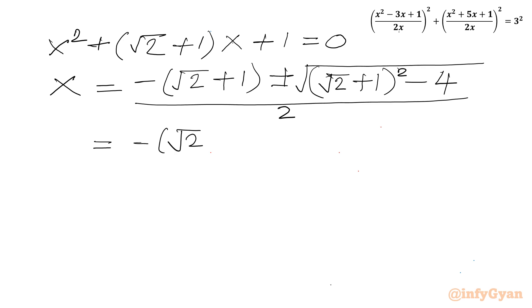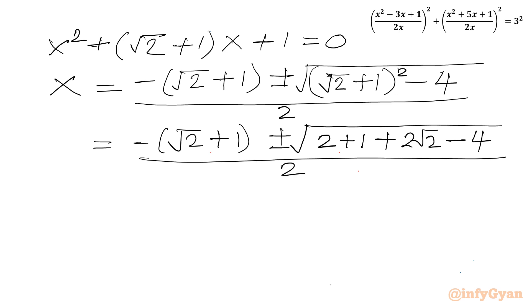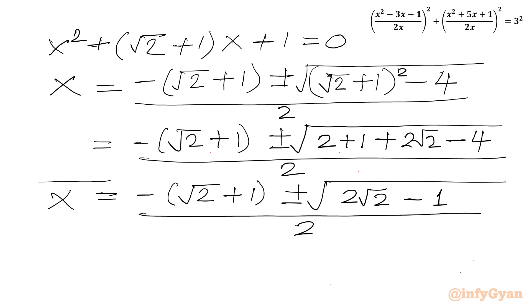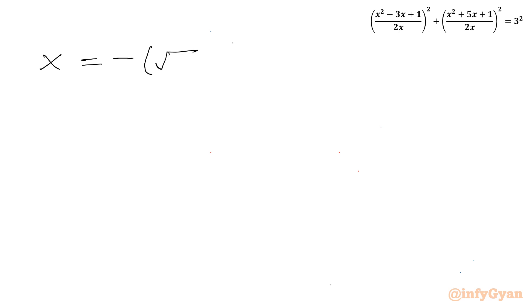Expanding (√2 + 1)²: √2² = 2, 1² = 1, and 2ab gives 2√2, so the discriminant becomes 2 + 1 + 2√2 - 4 = 2√2 - 1, which is positive. So we have 2 real solutions: x = [-(√2 + 1) ± √(2√2 - 1)] / 2, which we accept.